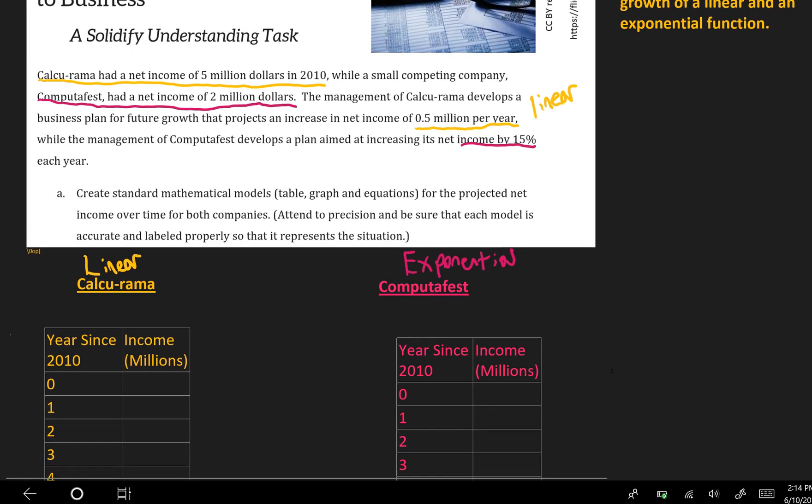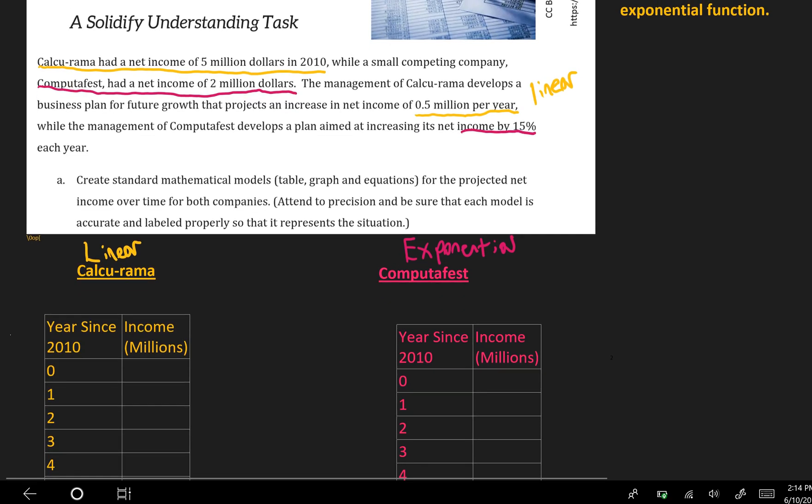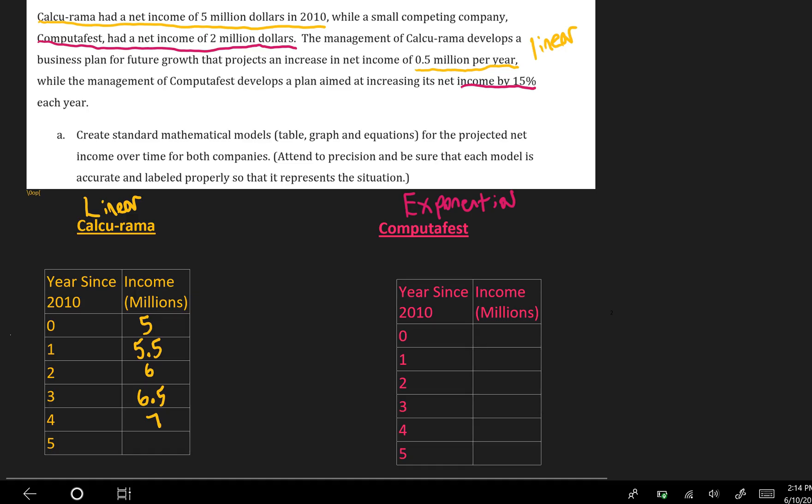And so let's go ahead and fill in that table. So in the years since 2010, well in 2010 it told us in the first sentence they had $5 million. So then it's going to be $5.5 million, then $6 million, then $6.5 million, then $7 million, and then $7.5 million.